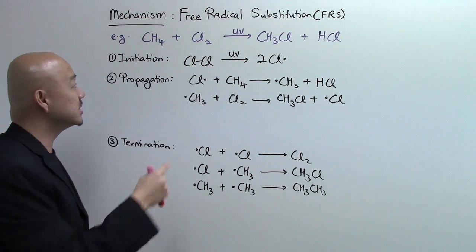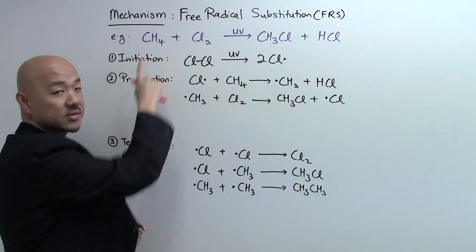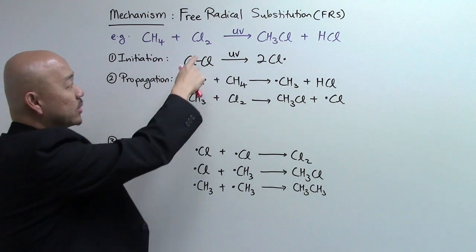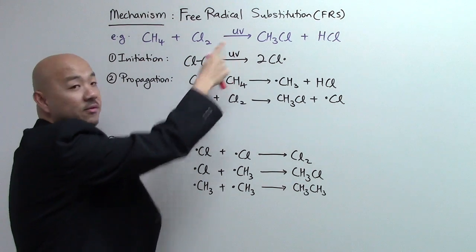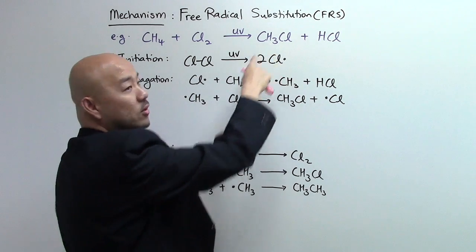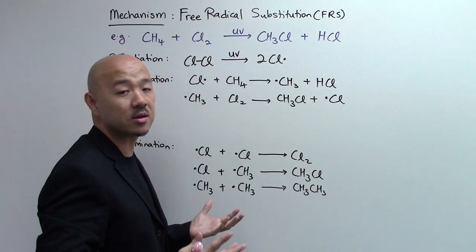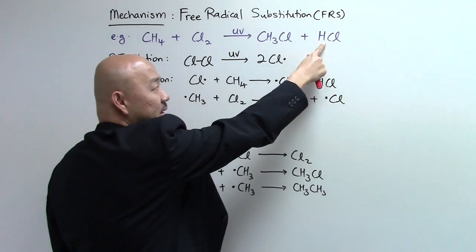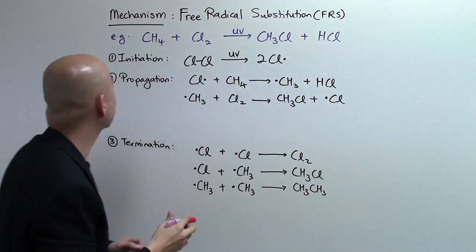Let's use an example, the simplest alkene that we can ever have, CH4 methane. Let's say it reacts with chlorine in the presence of UV light. It will then give you chloromethane, a halogenol alkane or sometimes called alkyl halides, and hydrogen chloride.